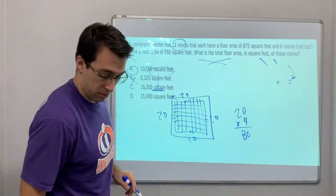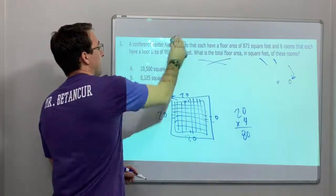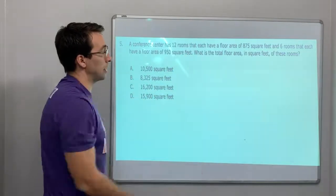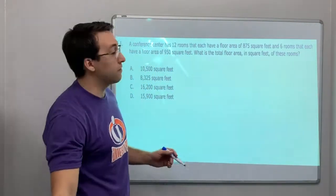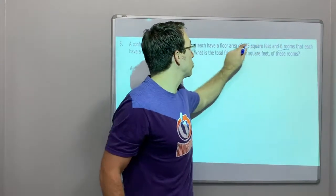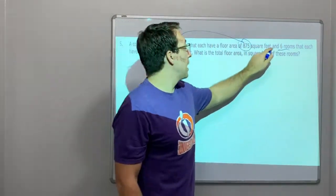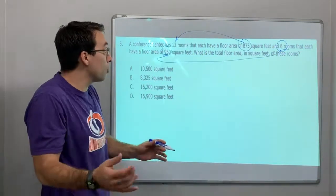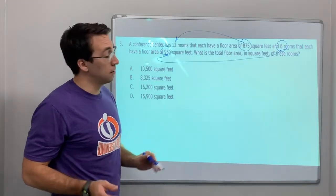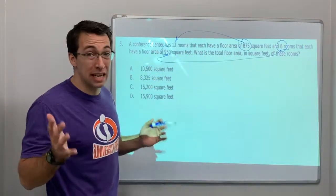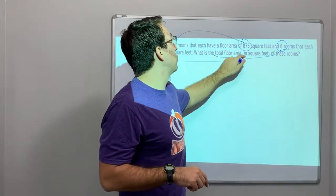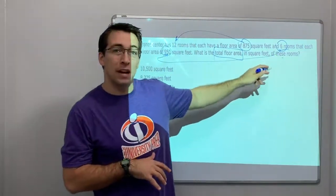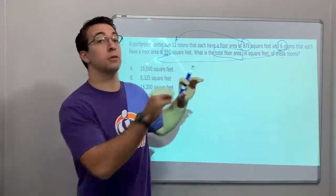Number five: a conference center has 12 rooms that each have a floor area of 875 square feet, and six rooms that each have a floor area of 950 square feet — so 18 rooms total. What is the total floor area in square feet of all these rooms? It says all of them, not just the six or just the twelve.